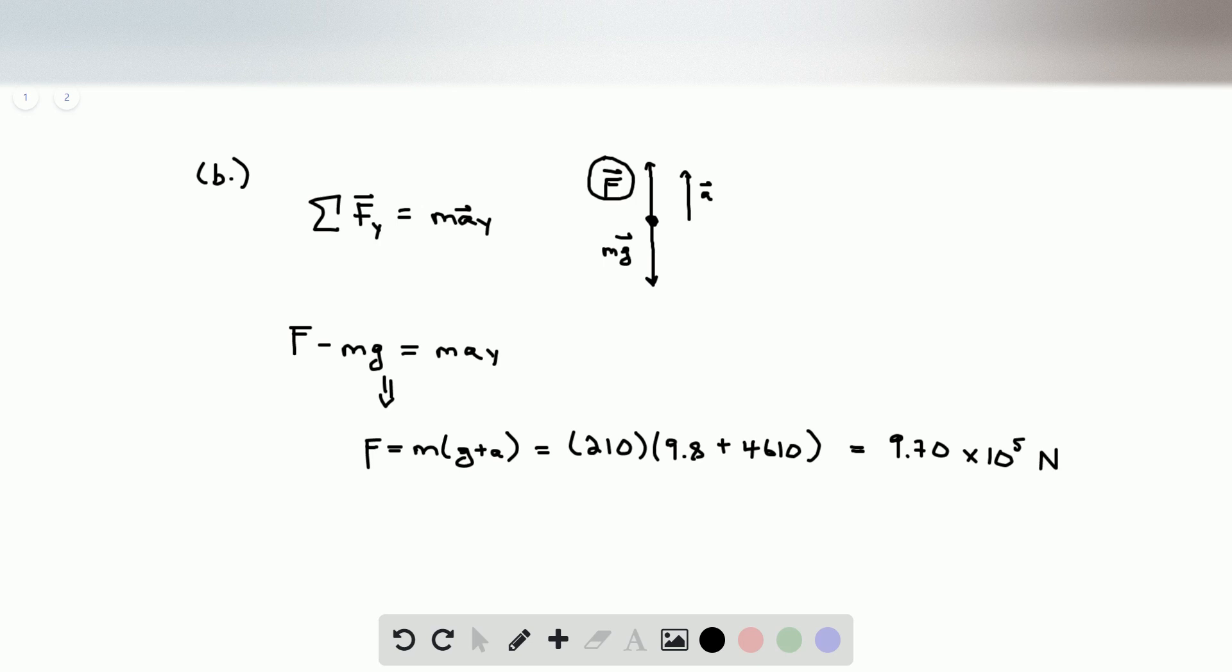When we turn these into the g's, we can replace the mass with the weight. And so the force is also the weight. I'm just going to leave it as w times these accelerations in terms of g's. So 9.8 is just 1g. And then 4610 we found in part a was 470 g's.